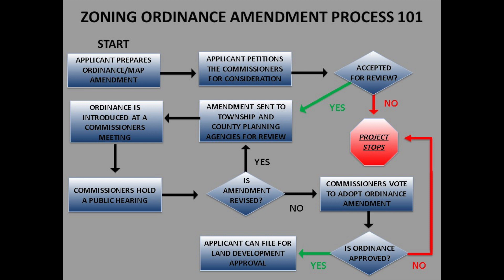If the commissioners decide to not accept the petition, the project stops. However, if the commissioners do accept the petition for consideration, the amendment is sent to the Township and County Planning Agencies for review. After a review period and a period of public comment, the ordinance is introduced at a meeting for the commissioners, at which point public comment is also provided. The commissioners would hold a public hearing at which public comment is once again sought. If the amendment is revised, the process starts all over again at the Township and County Planning Agencies for review, and the amended ordinance is once again introduced at a commissioners meeting with another public hearing scheduled, all of which allow for public comment.